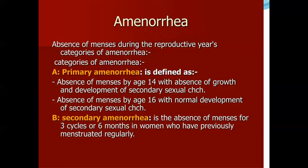Amenorrhea is the absence of menses during the reproductive years, typically between 14 to 40 years of age — not before puberty and not after menopause. Primary amenorrhea is defined as absence of menses by age 14 with absence of growth and development of secondary sexual characteristics. These patients have never undergone menstruation, indicating failure of gonadal hormones and the gonad itself.